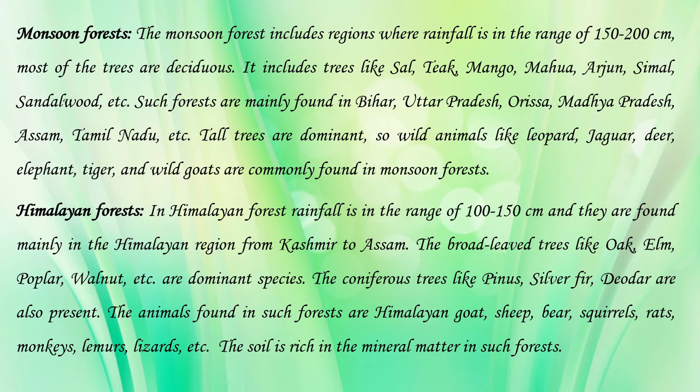Wild animals that can hide in the tall trees — such as leopard, jaguar, deer, elephant, and wild goats — are commonly found in the monsoon forest. The third category is Himalayan forest, where rainfall is in the range of 100 to 150 cm. They are found mainly in the Himalayan region from Kashmir to Assam.